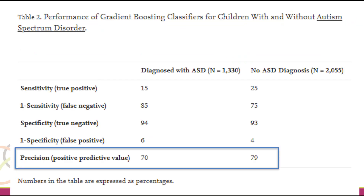When we do that, our gradient boosting classifier is focused on optimizing precision — which for more classically statistics-oriented people is called positive predictive value. It basically means there's a 70% success rate of the algorithm saying this profile, this person's going to probably succeed. We got 70% when they are diagnosed with ASD and 79% for those without ASD.